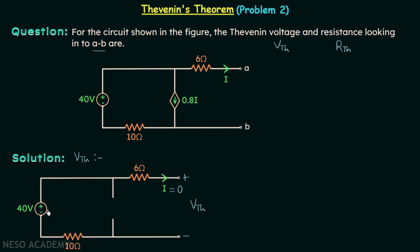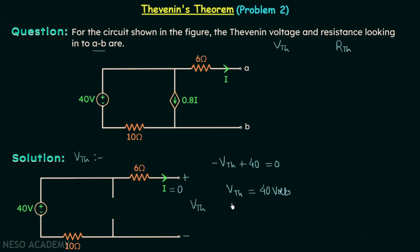Therefore we can open circuit this branch. Now we are left with the 40V source connected in series with the 6 ohm resistor and 10 ohm resistor, and this connection is open circuited. Therefore the current in this branch will be equal to zero, and hence no voltage will be dropped across these resistors. Applying KVL in this loop, we get minus VTH plus 40V equals zero, so VTH equals 40V.